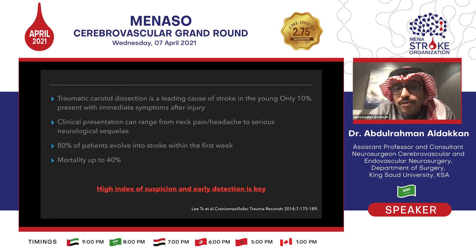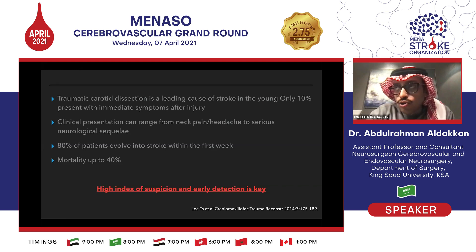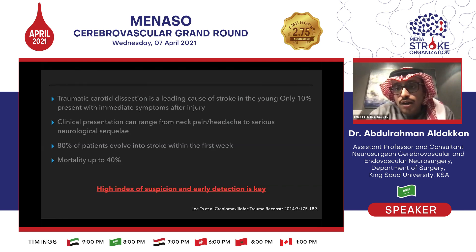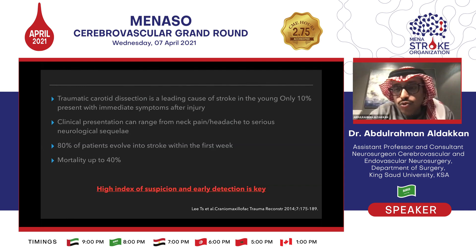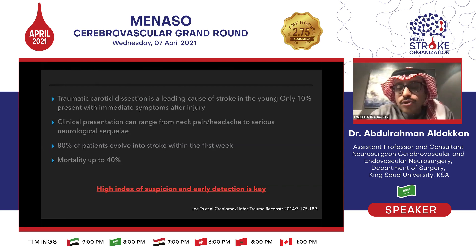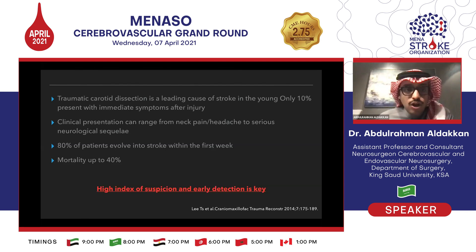The clinical presentation can range from neck pain and headache to serious neurological sequelae, in the form of an ischemic event, hemorrhagic stroke, or specifically subarachnoid hemorrhage. The concerning thing is that 80% of those patients have their stroke evolve within the first week — from the injury or from the development of the traumatic dissection. Once that happens, the mortality rate is as high as 40%. So high index of suspicion and early detection is key to manage those patients and try to prevent significant neurological sequelae.